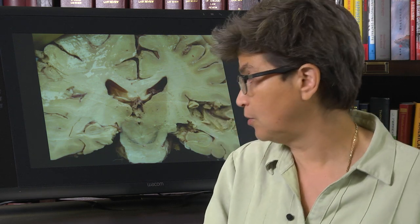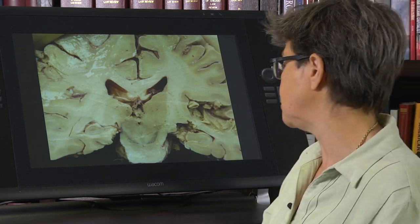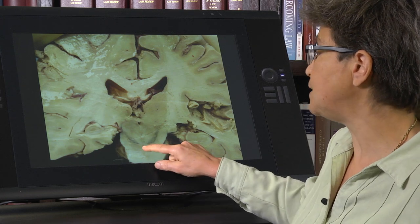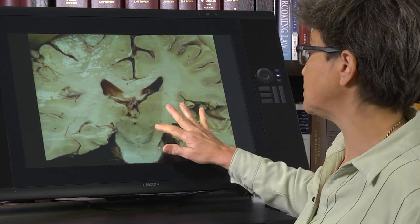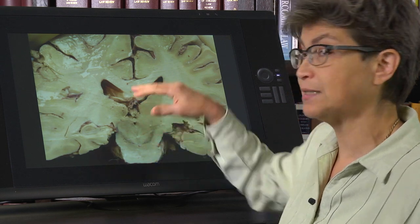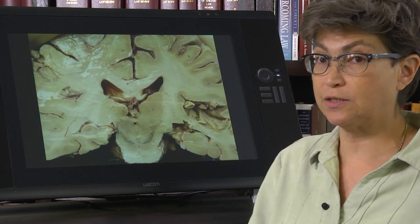The VTA is important for providing dopamine into the ventral striatum, the nucleus accumbens, which is up in the forward part of the striatum, whereas the substantia nigra pars compacta provides it to the rest of the striatum.